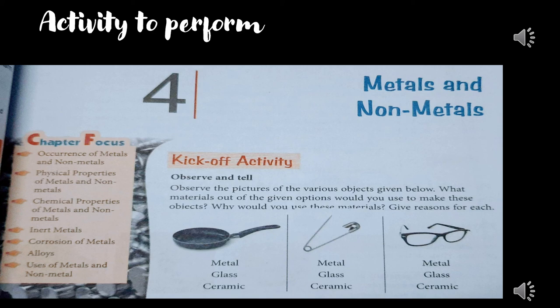Metal can be iron, aluminum, or others. Glass is made up of silica. Ceramics are also made up of silica, but their properties are completely different. We are going to understand these things here.